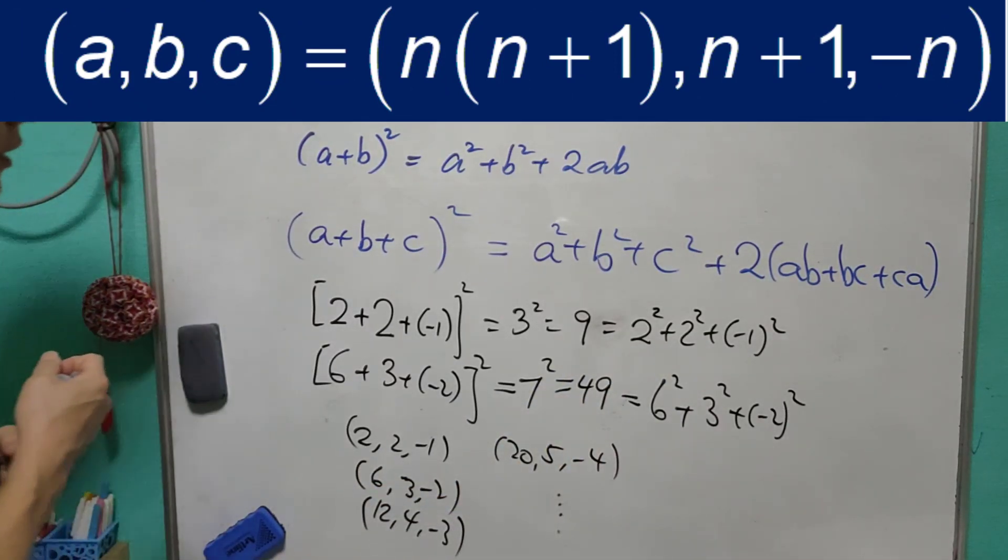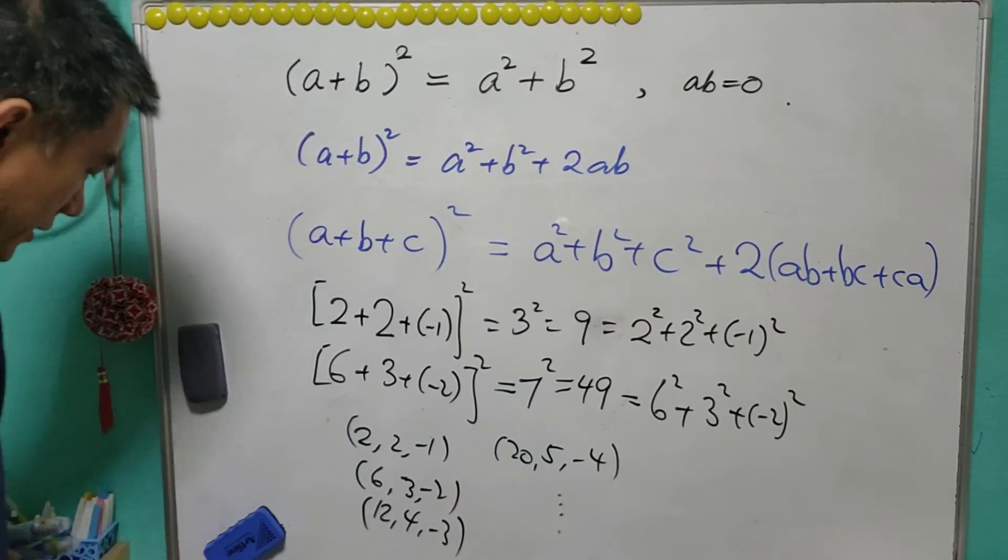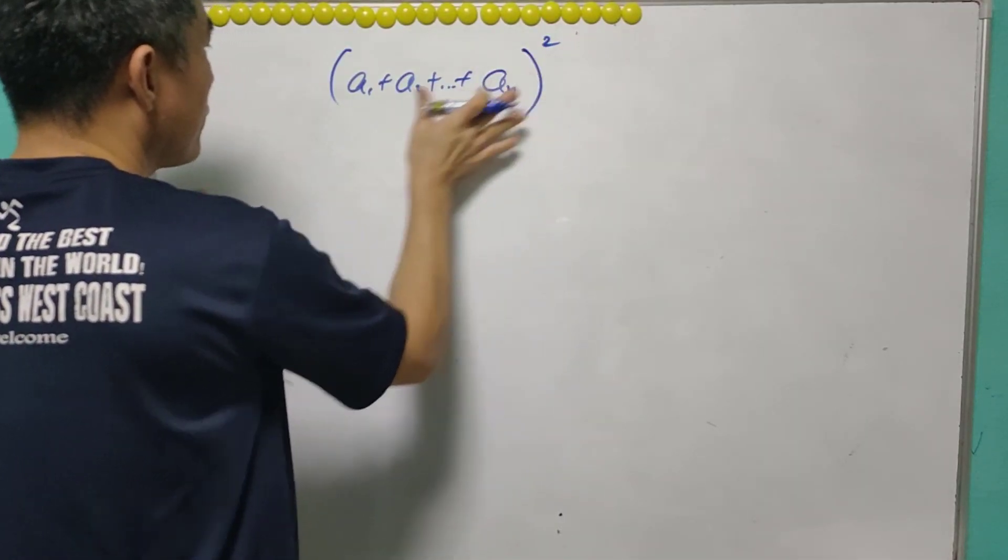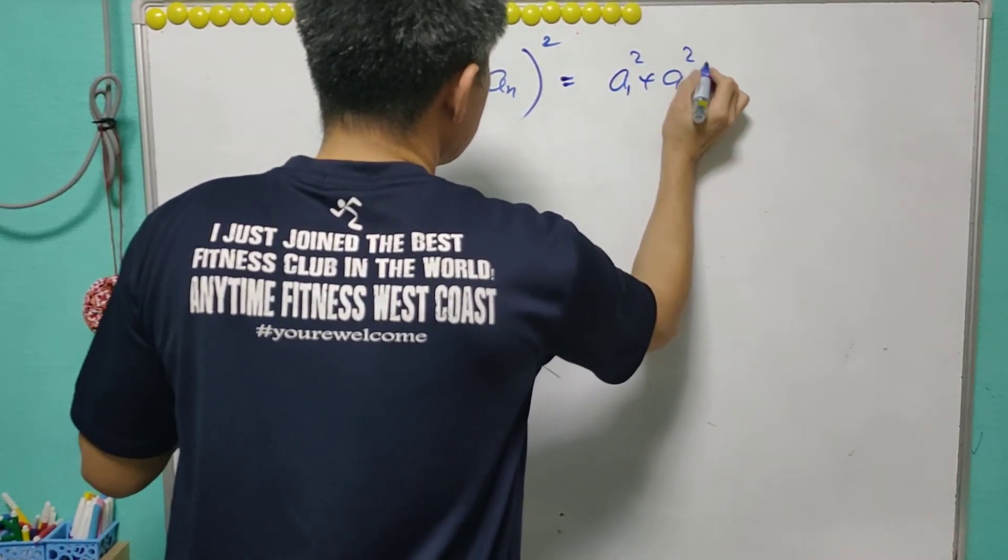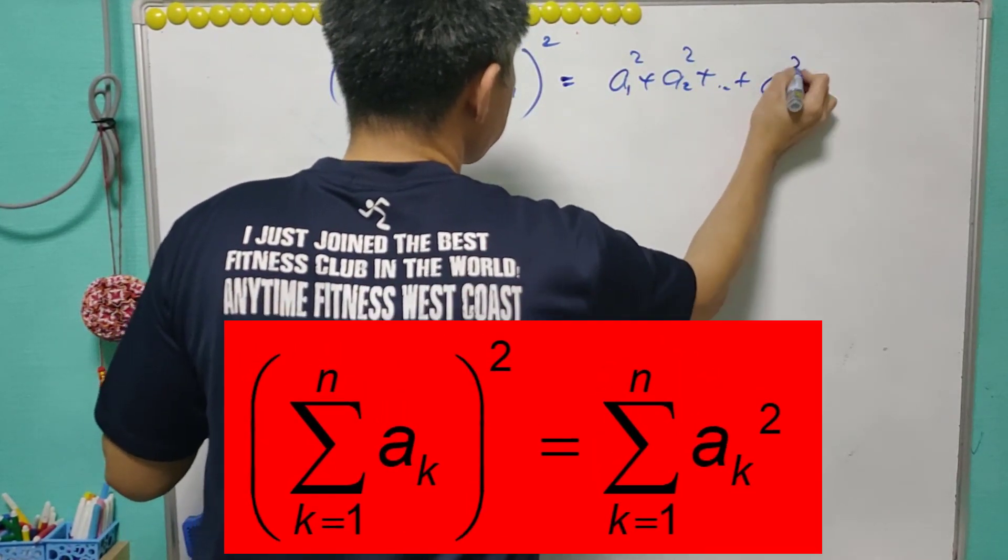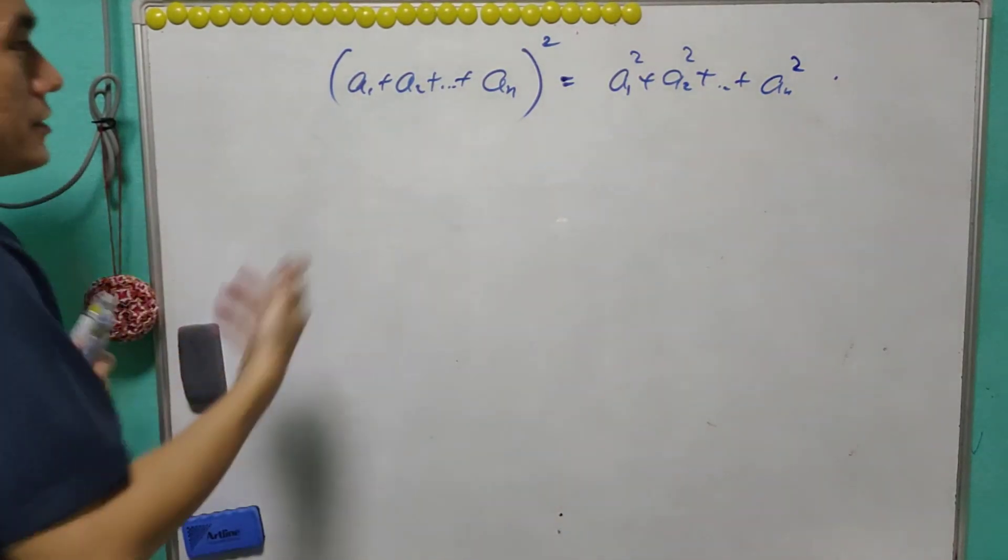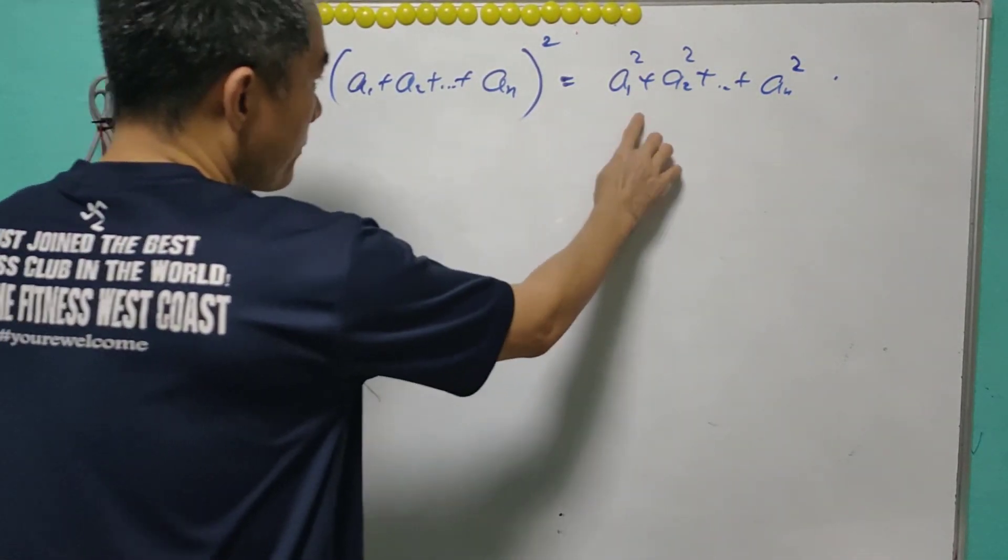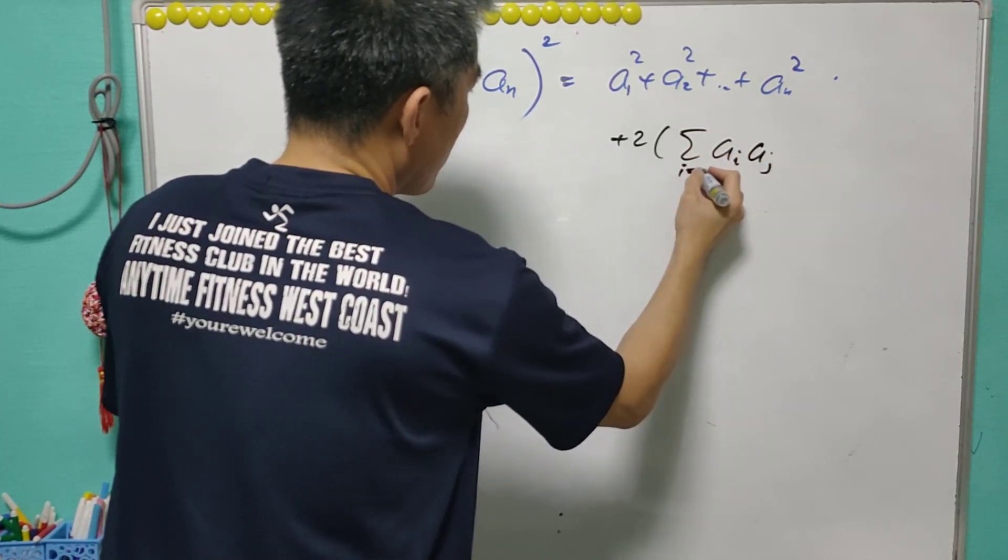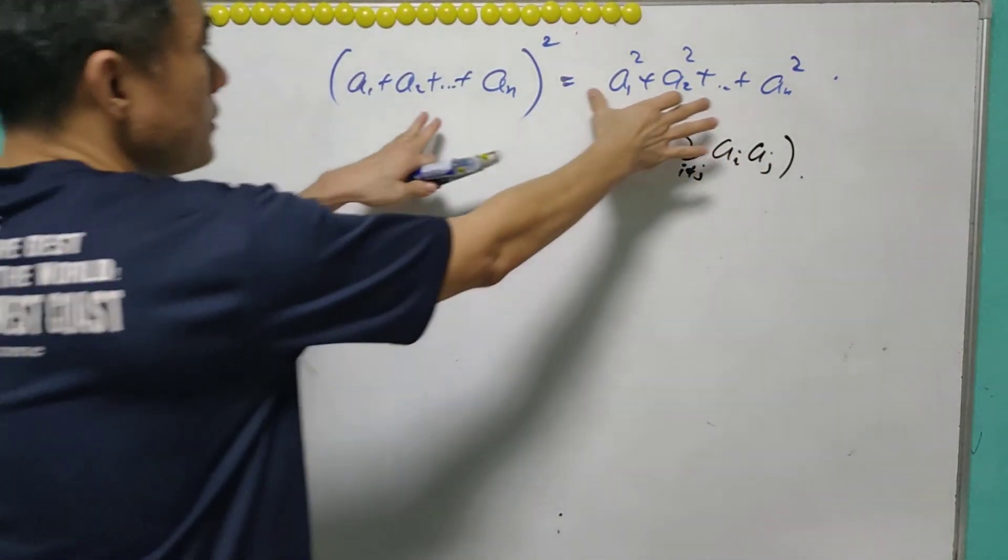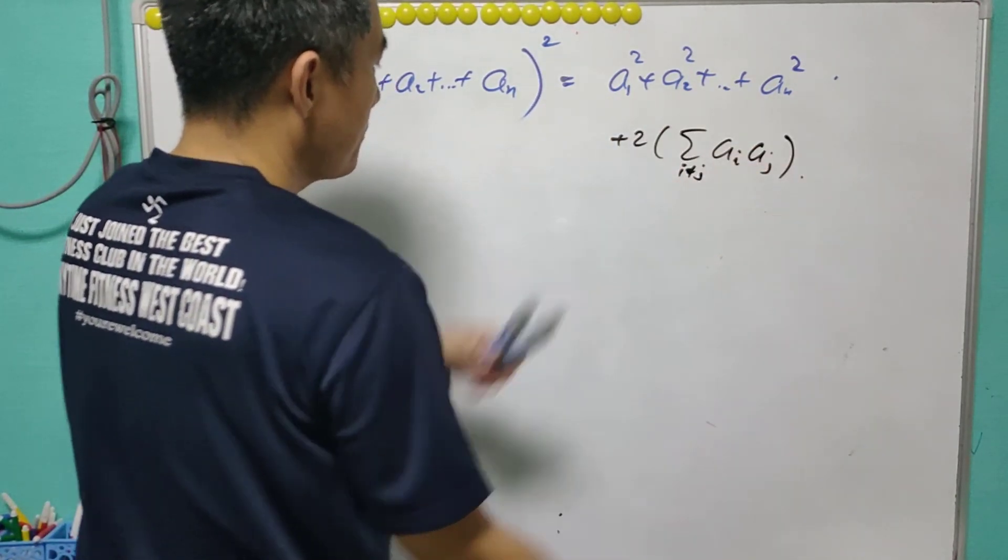So now we may be a little bit greedy and want to know what happens for the general case. Is it possible to have the square of the sum equals to the sum of the squares? What is the criteria for this? From the expansion, we know that there will be two summation ai times aj, where i not equal to j. So in order this is the same, this has to be equal to 0. But it looks a little bit complicated.